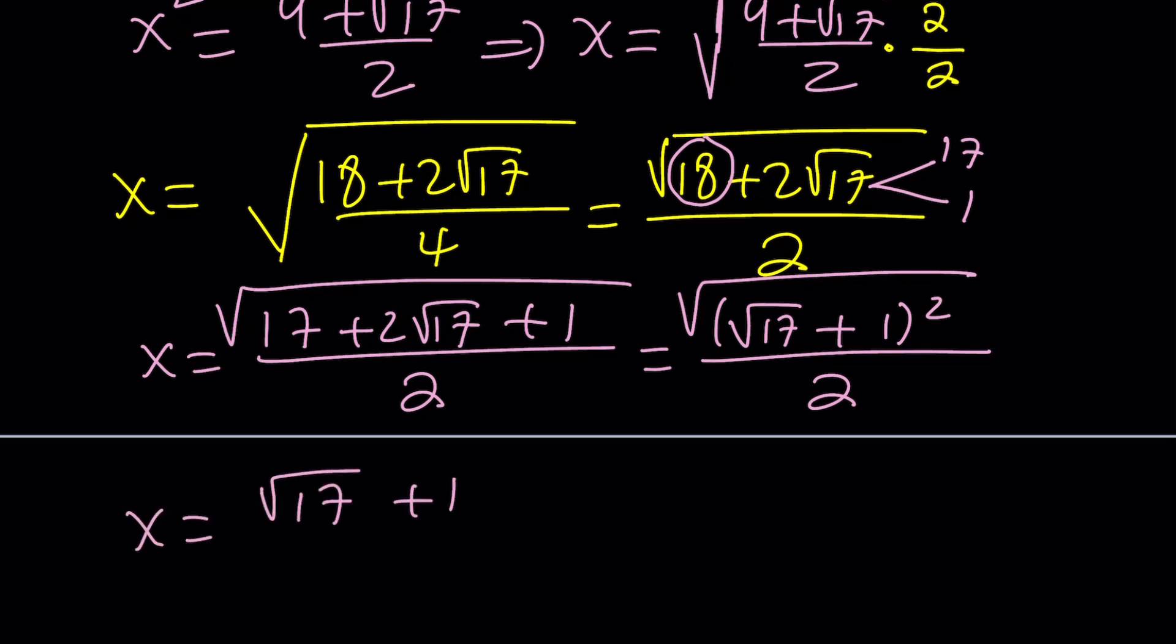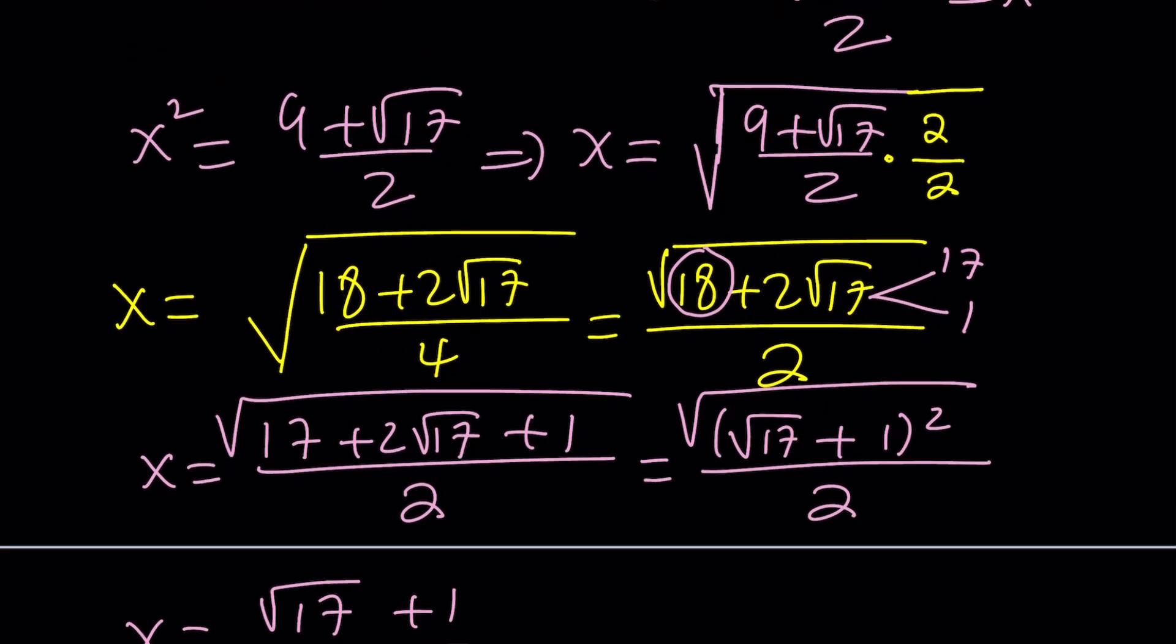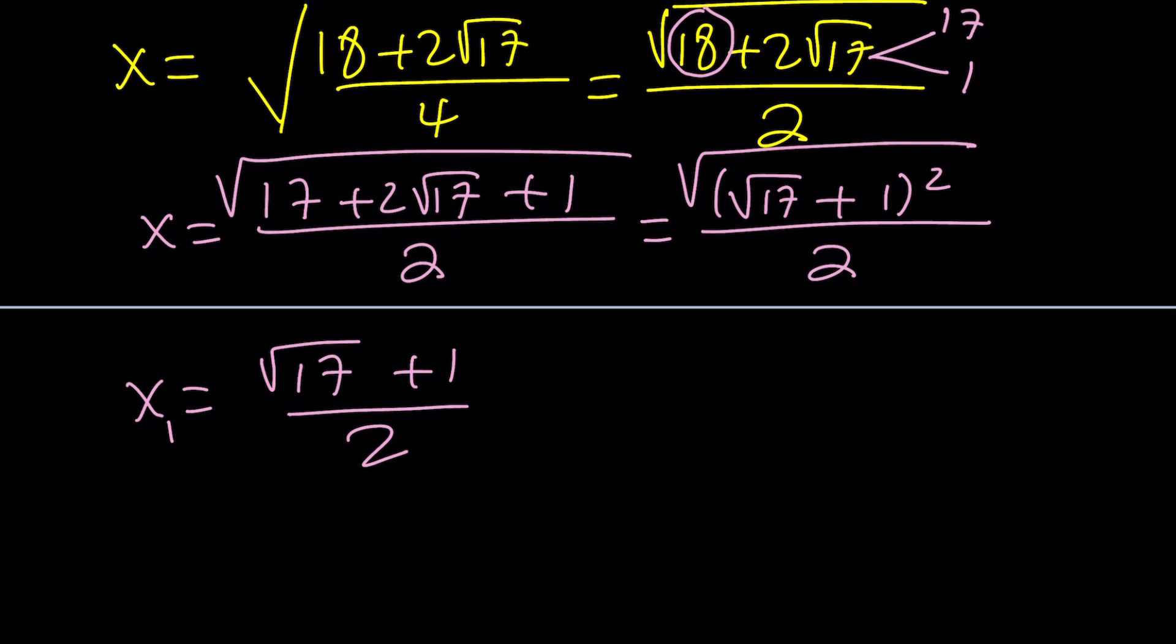So, if you square this expression, you should be getting 9 plus root 17 over 2. And you indeed do, if you test it out. So, one of the x's, let's call that x sub 1, and x sub 2 is going to be the opposite of this number, of course.